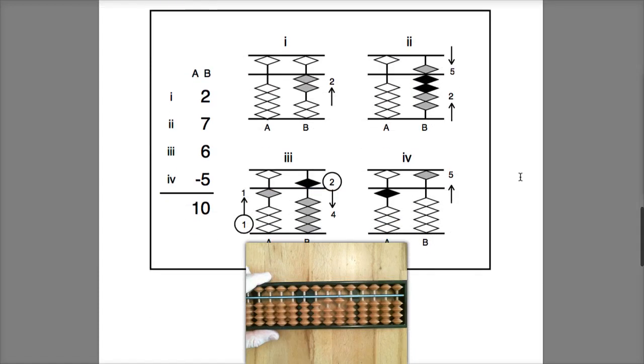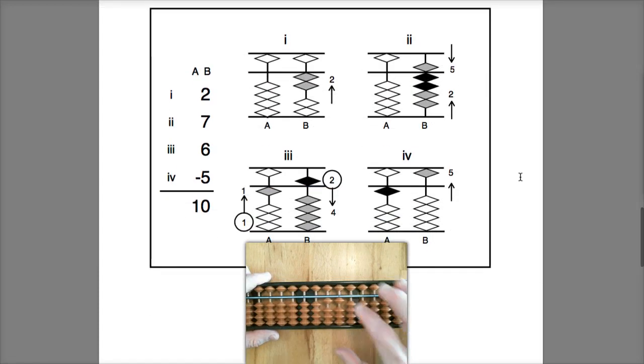Okay, let's try a second example. In this example we're going to start off with two. And then we're going to add seven. Okay, I can just add seven straight away. And then thirdly I need to add six. Well, as we can see here I don't have any beads left to add on my target rod, so I can't add six directly.